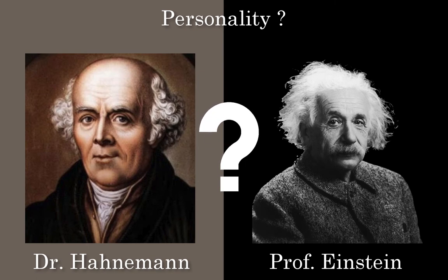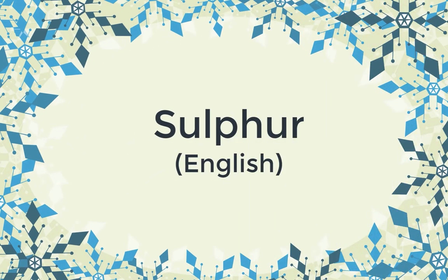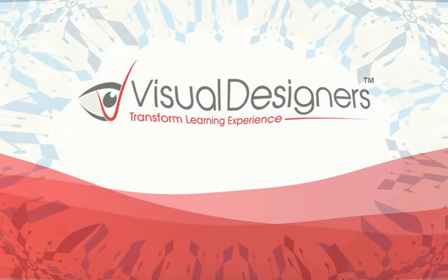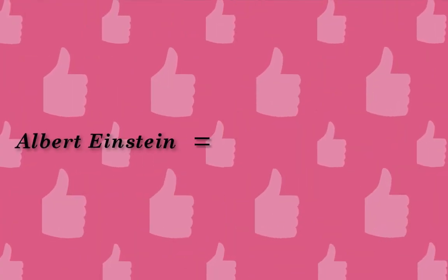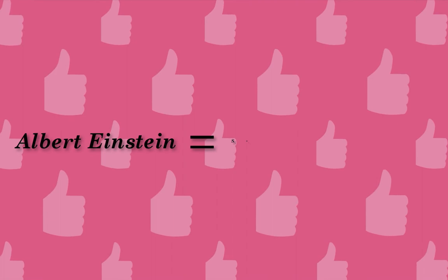So can you guess the personality of Hahnemann and Einstein? Yes, both of them belong to the same personality — both were Sulfur. Welcome to another video by Visual Designers. We always try to describe a remedy with the help of a popular personality, and among all our efforts, it would not be an exaggeration that the personality of Einstein perfectly correlates with that of Sulfur.